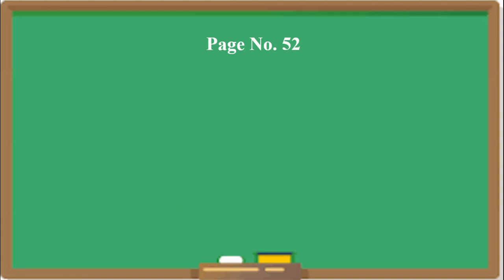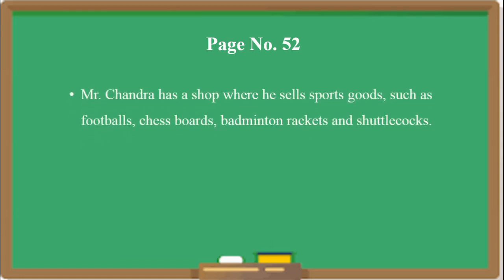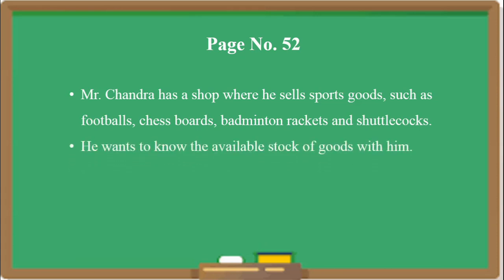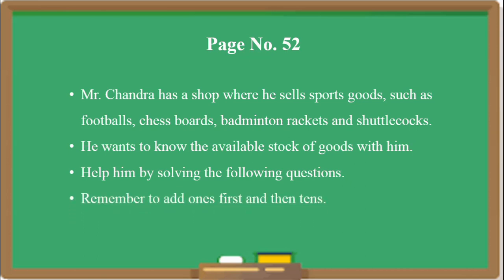Now, children, let's open page number 52 of your maths textbook. You have to solve these questions with me. Here is a story about Mr. Chandra's shop, where he sells sports goods such as footballs, chess boards, badminton rackets, and shuttlecocks. He wants to know the available stock of goods. Always remember to add the 1's first and then the 10's.